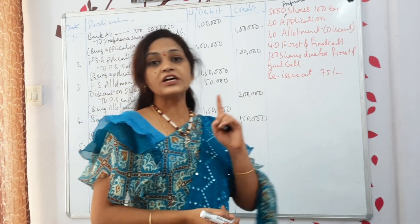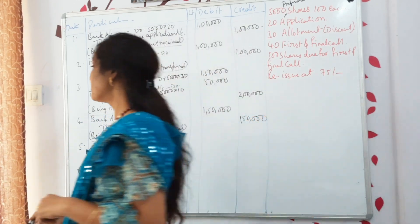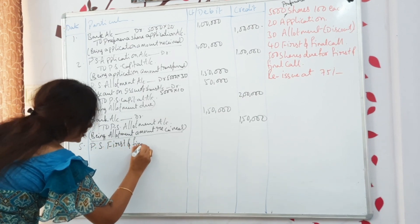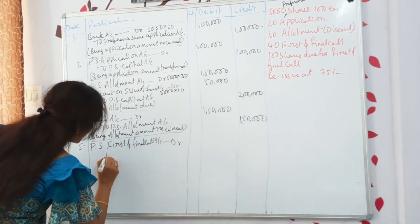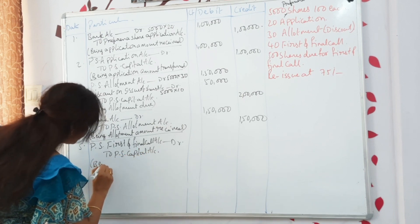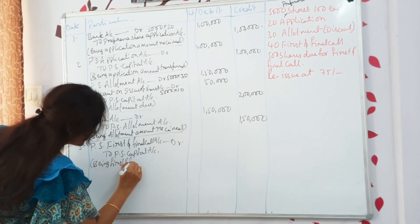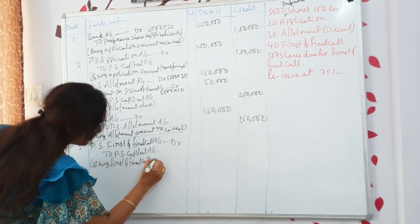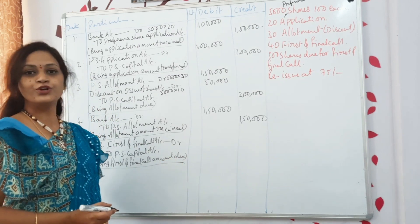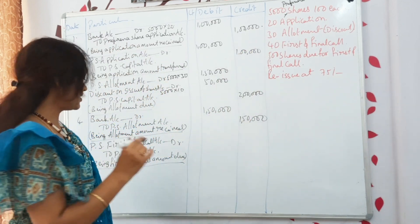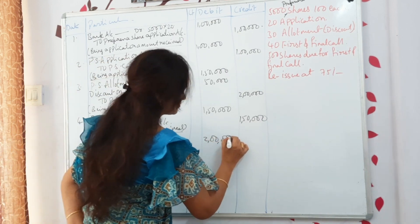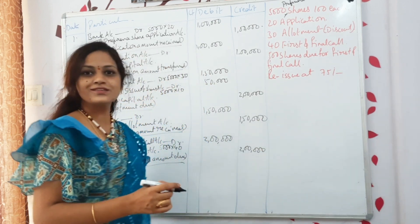Next, writing the journal for first and final call due: Preference Share First and Final Call Account Dr to Preference Share Capital Account. The amount is 5,000 shares × ₹40 = ₹2,00,000.